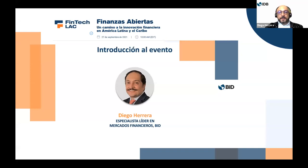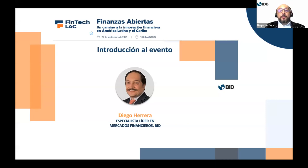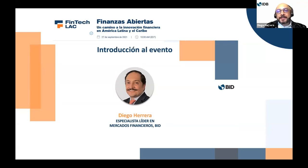Mientras se va conectando nuestra audiencia, les damos la bienvenida a nuestro evento de hoy. Antes de presentarme y con el propósito de que todos entendamos, déjenme darles unas instrucciones logísticas. Primero, vamos a tener traducción simultánea. Escoger el idioma es muy simple. En la parte inferior de su pantalla van a encontrar un globo terráqueo; al hacer clic en el icono, escogerá el idioma de su preferencia. Aparece en español e inglés.